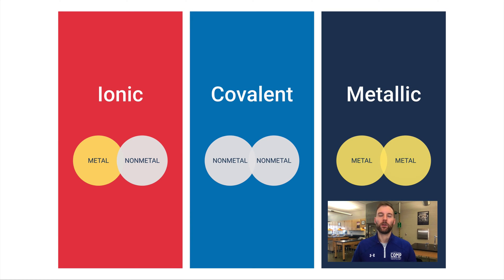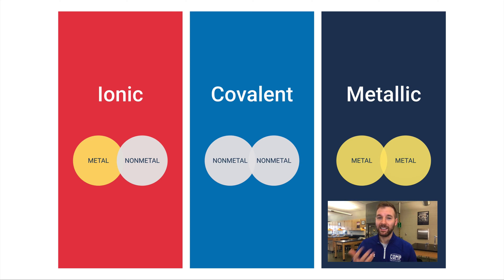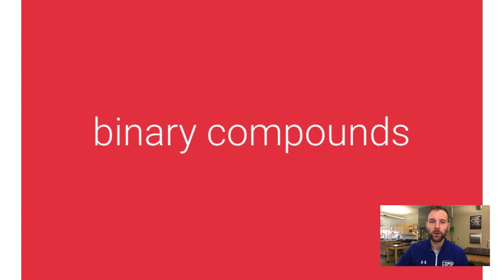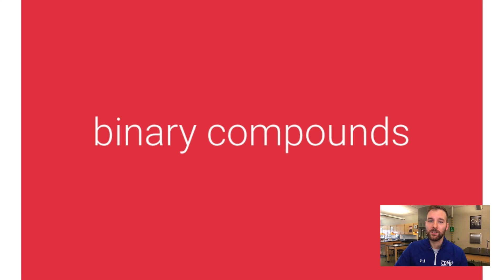Let's go back to the three types of bonds. Ionic bonds are between metals and non-metals; covalent bonds are between non-metals; and metallic bonds are between only metals. This gives us a structure for how we name things, because you follow a different set of rules depending on what kinds of bonds make up a substance. In ionic bonds we have binary compounds — binary just means two parts, two elements.